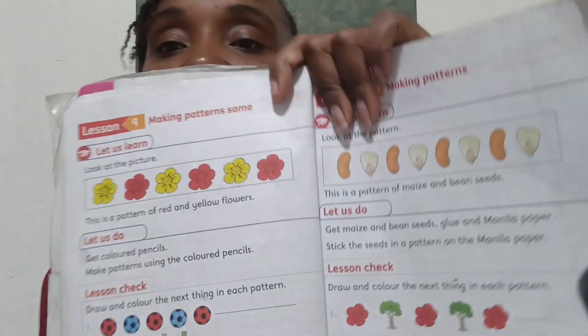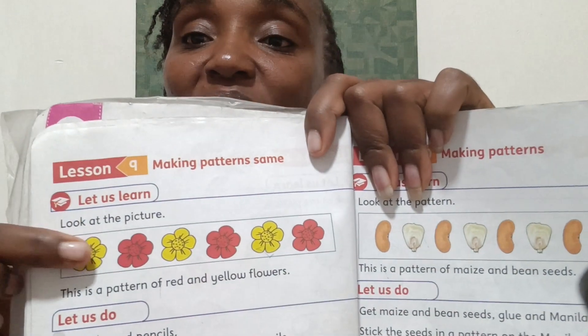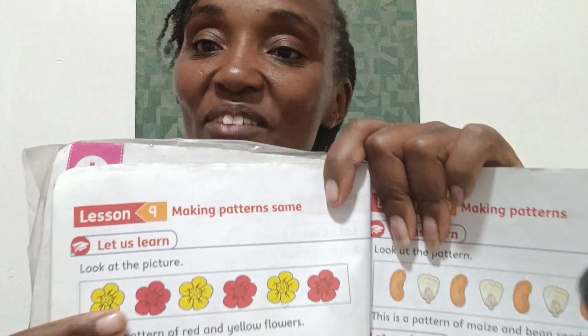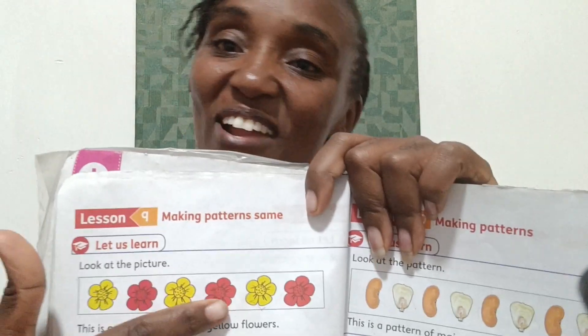We are going to learn how to make patterns using different things. We can use the same things but with different colors. For example, in our books they use the same flowers, but starting with yellow then red, then yellow then red — and so on. Well done!